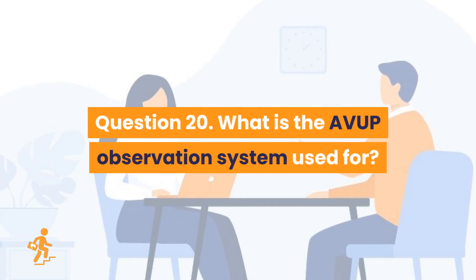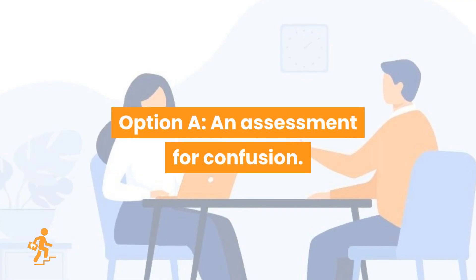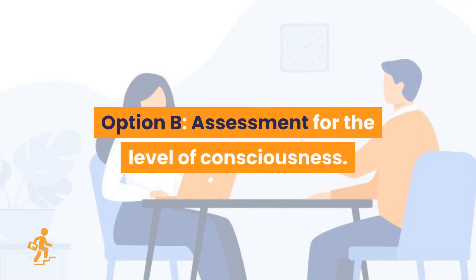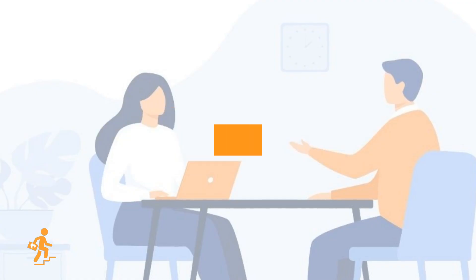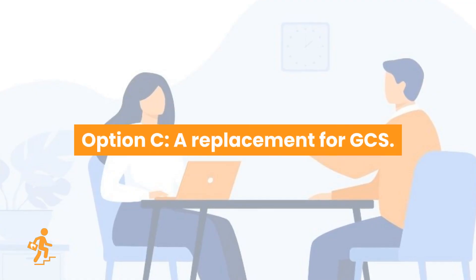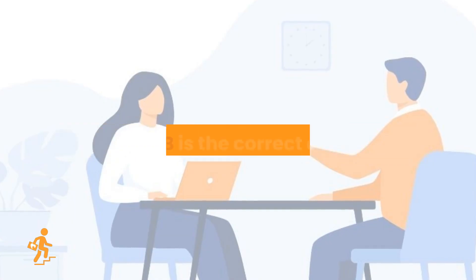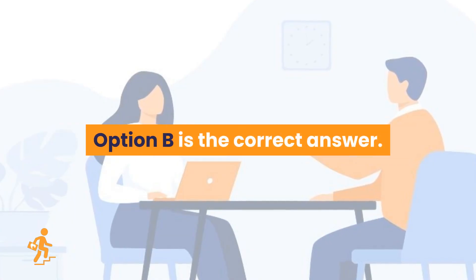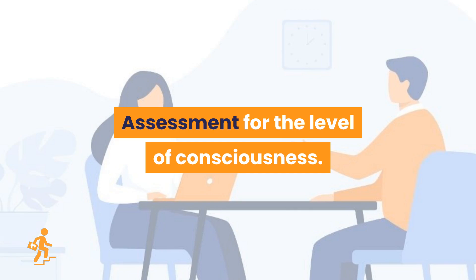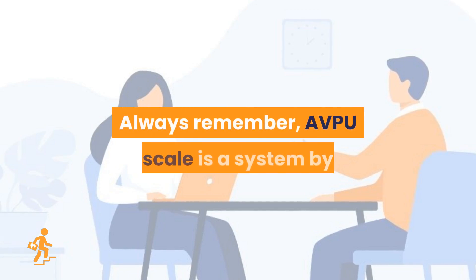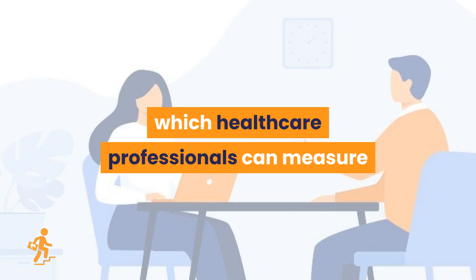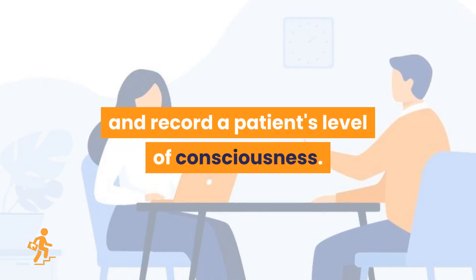Question 20. What is the AVPU observation system used for? Option A: An assessment for confusion. Option B: Assessment for the level of consciousness. Option C: A replacement for GCS. Option D: Assessment of vital signs. Option B is the correct answer: assessment for the level of consciousness. Always remember, the AVPU scale is a system by which healthcare professionals can measure and record a patient's level of consciousness.